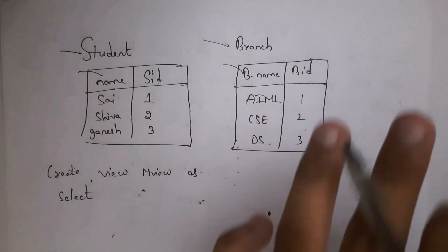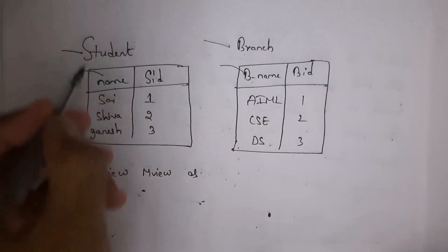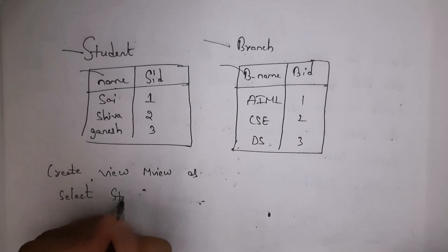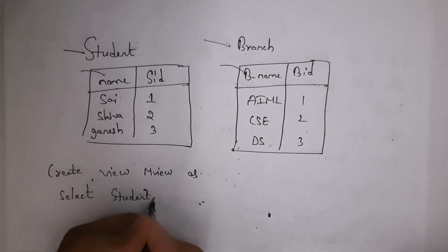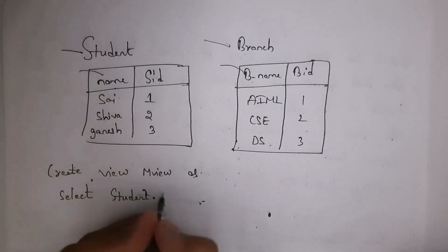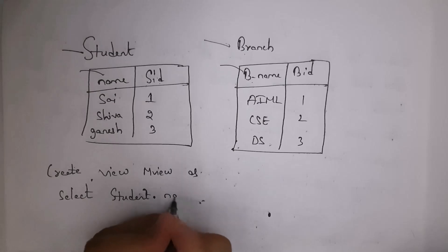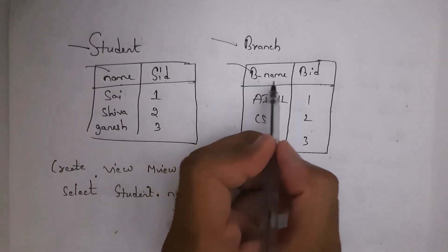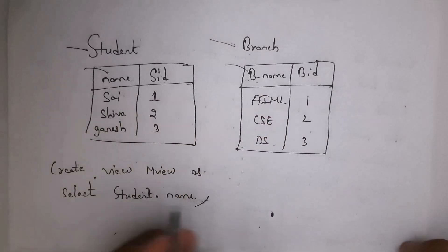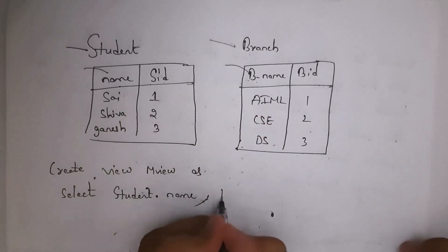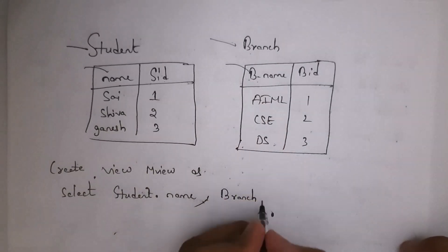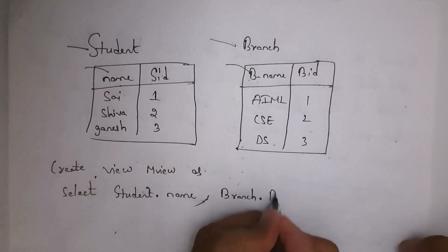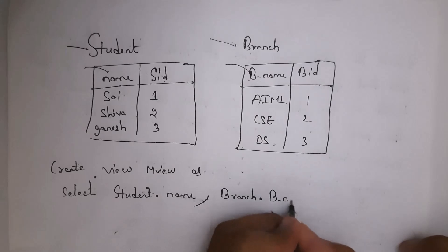I want to select the name column from the student table, so write: SELECT student.name. Then I want to select the branch_name column from the branch table, so write: student.name, branch.branch_name FROM student, branch. I have selected two columns: the name column from the student table and the branch_name column from the branch table.